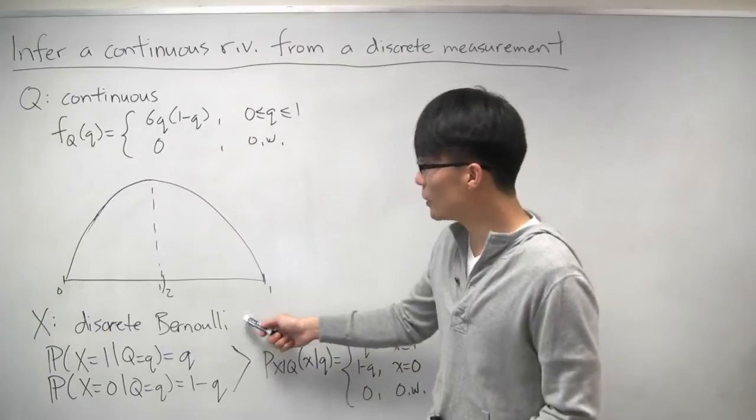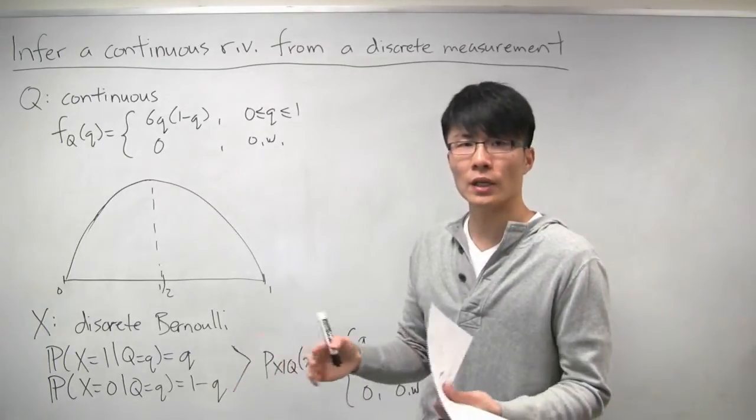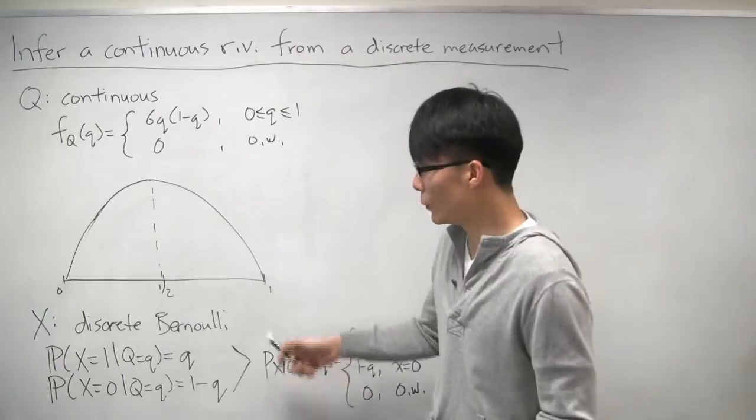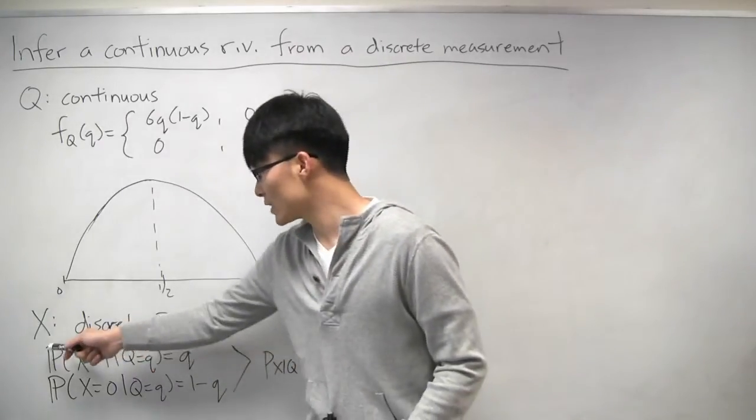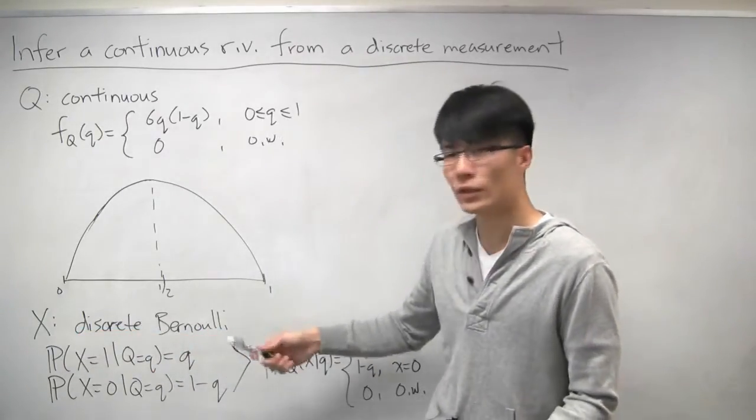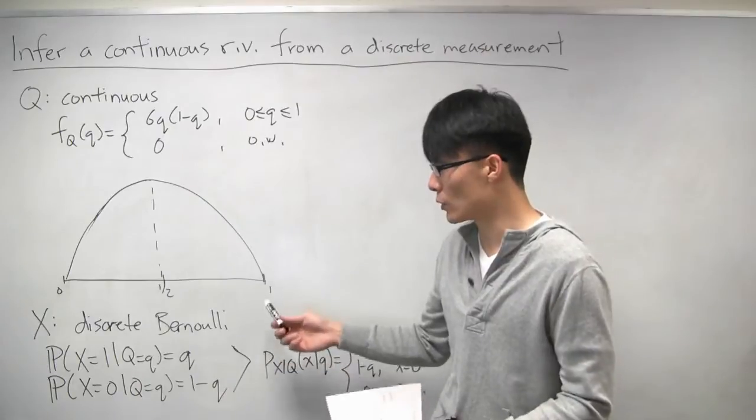Because of that, the measurement or observation that we get is discrete. It's either we get heads or we get tails. We model that using a discrete random variable x, which in this case turns out to be just a Bernoulli random variable, either 0 or 1.